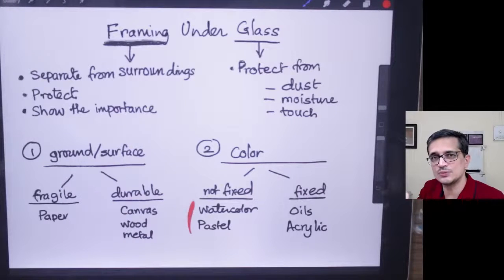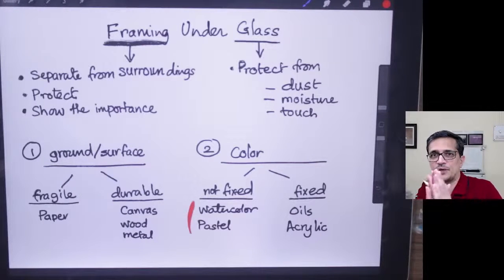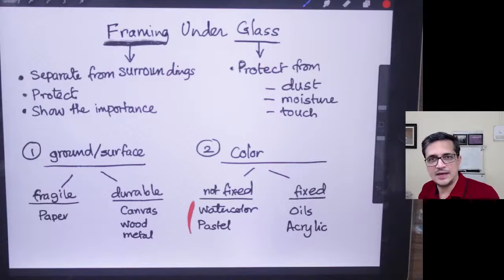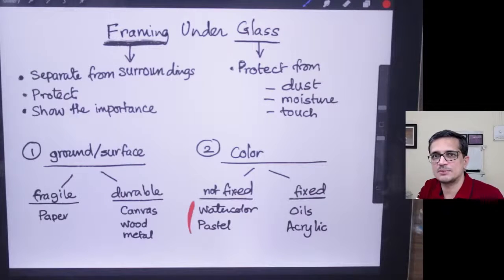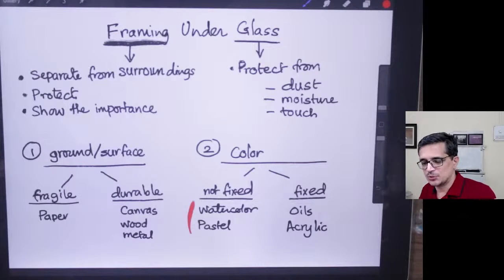They need to be protected from touch, from moisture, and from dust, because you can't wipe them. If water gets absorbed, the color might loosen up and move around. If a person happens to touch it, the pigment will move around, so you need a glass on the painting.